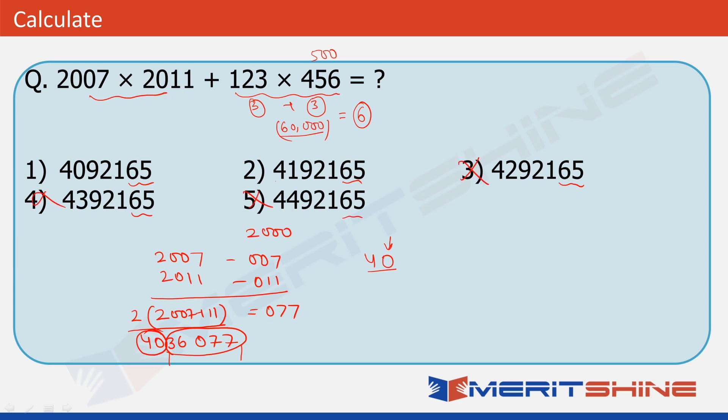Now, if you look at this option 2. It has 419 as its first three digits. And now, if we compare it with 403. And to this, if we added a 6 digit number also. It would become only 413. So, clearly this option can also be ruled out. And hence, our answer would be only 1. 4092165. I hope it is clear.